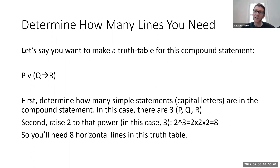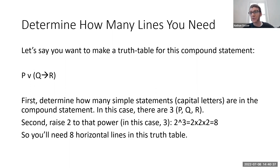Second, take the number two and raise it to that power — in this case, to the third power. Two times two times two equals eight. That is how many horizontal rows you're going to need in this truth table: two raised to the power of however many simple statements there are.